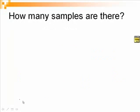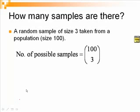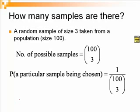How many samples are there altogether? A random sample of size 3, taken from a population of size 100, will have a possible number of 100 choose 3 samples. And if all these samples have equal chance of being picked, then the probability of a particular sample being chosen will be 1 out of 100 choose 3.